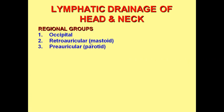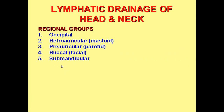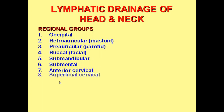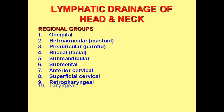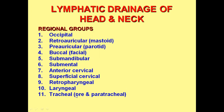Pre-auricular is in front of the ear where we have the parotid gland. Then we have buccal, that is facial. Below the mandible we have submandibular group of lymph nodes; below the chin we have submental group of lymph nodes. In front of the neck we have anterior cervical, superficial cervical, retropharyngeal — behind the pharynx — laryngeal, and tracheal which are pre- and paratracheal. Pre is in front of trachea, para is on either side of the tracheal rings.